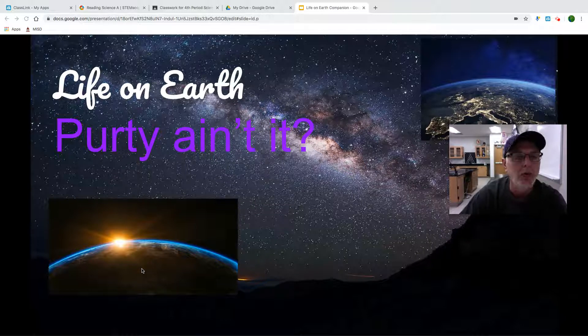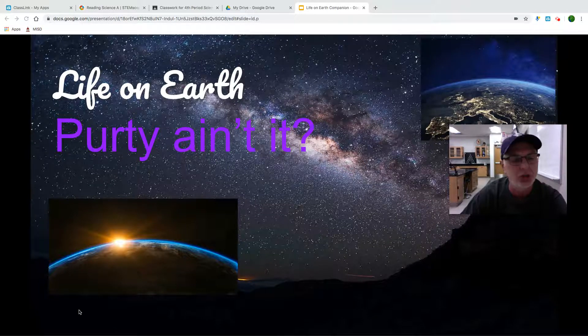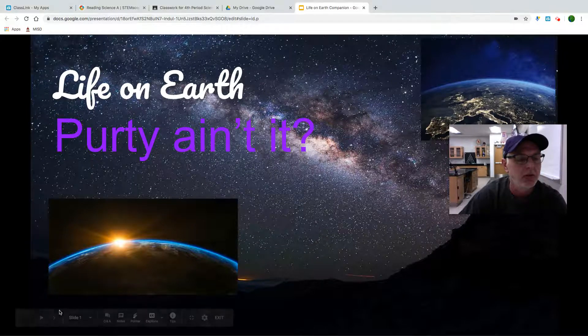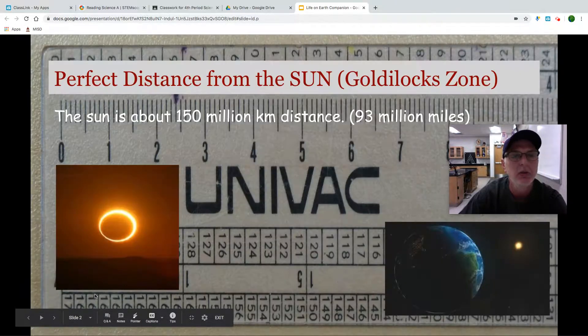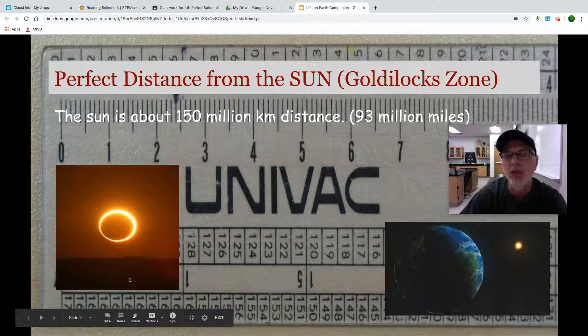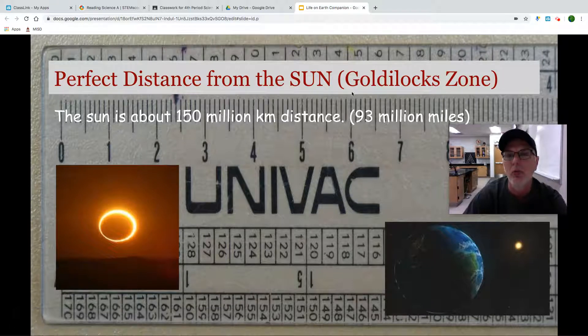One of the things we have to remember is we are in a perfect position for life to be sustained here on Earth. Our distance from the sun is very important. We're in what is called the Goldilocks zone.